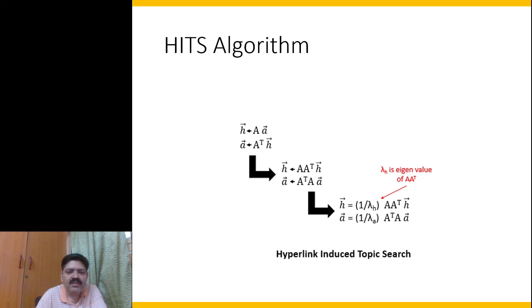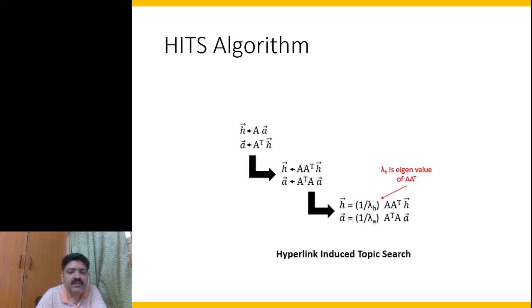We don't actually need to iterate many times using power iteration, because this resembles an eigenvalue problem. If the principal eigenvalue for A·A^T is λ_h, then h = (1/λ_h)·A·A^T·h, meaning the h vector is simply the principal eigenvector of A·A^T. Similarly, the a vector is the principal eigenvector of A^T·A. So once we have the A matrix, we can compute hub and authority scores directly without iterating.